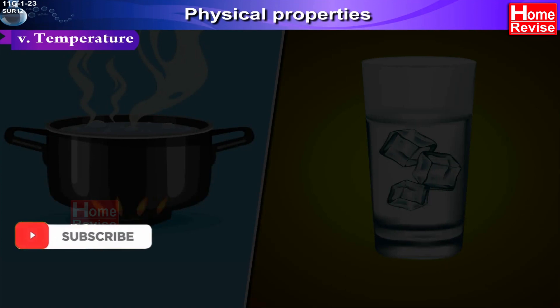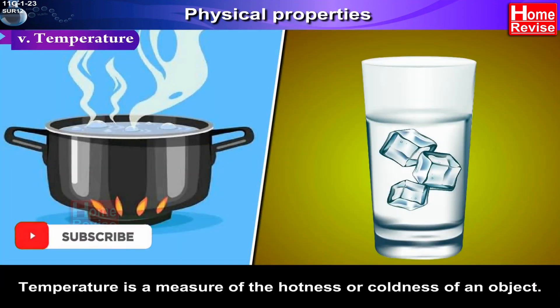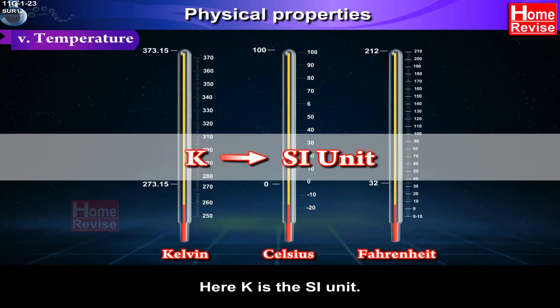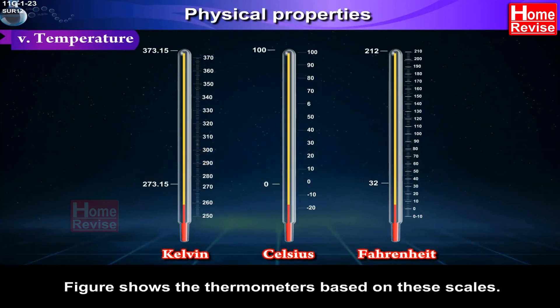Temperature. Temperature is a measure of the hotness or coldness of an object. There are three common scales to measure temperature: degree Celsius, degree Fahrenheit, and Kelvin. Here K is the SI unit. This figure shows the thermometers based on these scales.